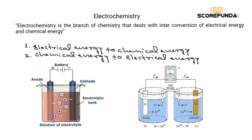The conversion of electrical energy into chemical energy is carried out in a cell called an electrolytic cell. This is our electrolytic cell, which carries out a non-spontaneous reaction by passing electric current.